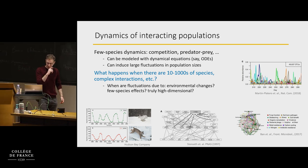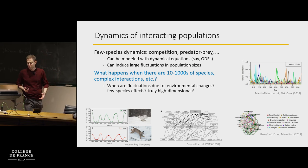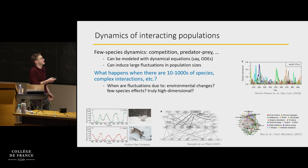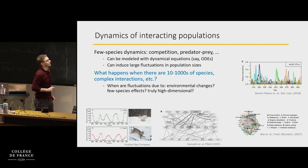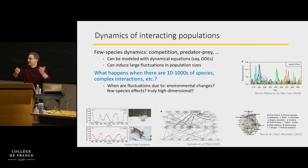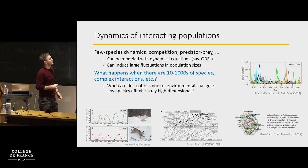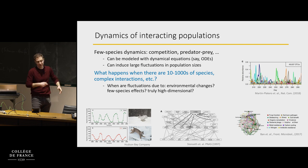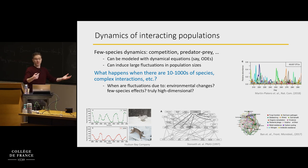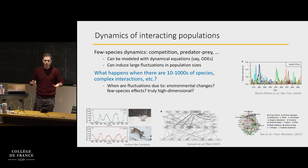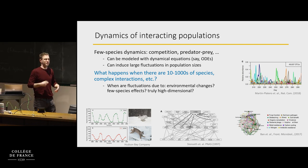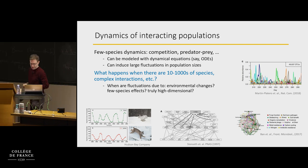What kind of questions would we ask? You would like to know what are these fluctuations. Maybe these fluctuations are just due to changes in conditions over time. Maybe it's just two or three species doing some interaction that causes these fluctuations and all the rest are just feeling those interactions. Or maybe it's truly a collective emergent effect that involves and requires very many species interacting together.